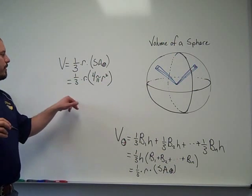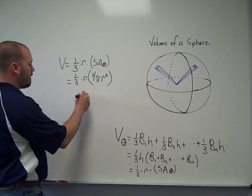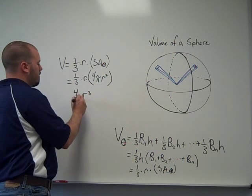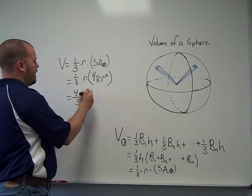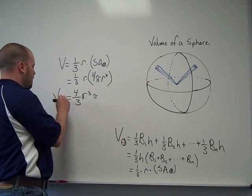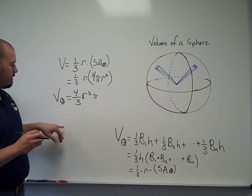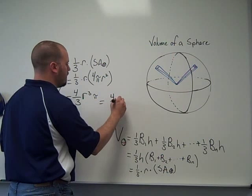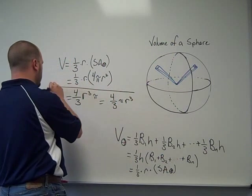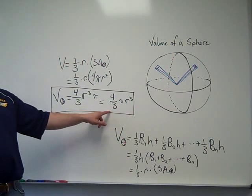It's a little bit more algebra. It's one-third r times r squared, so we've got r cubed. One-third times four is four-thirds, and then pi. That's the volume of a sphere. Most of the times you'll see it written just a little bit different. You'll see four-thirds pi r cubed. And that's the formula for volume of a sphere.